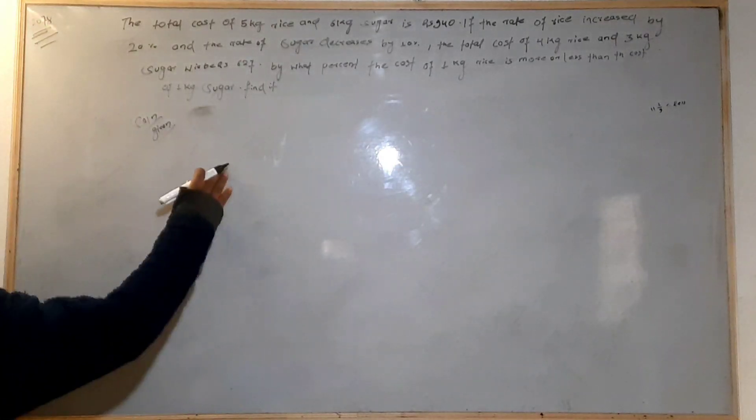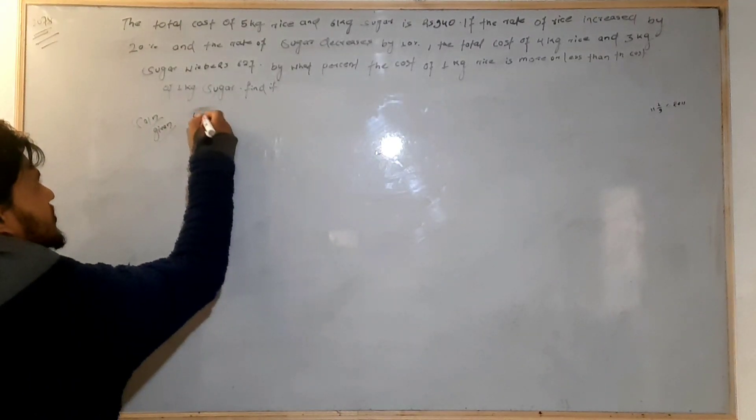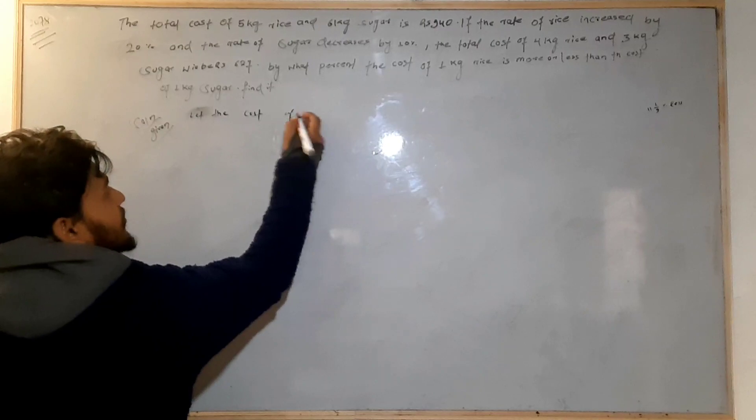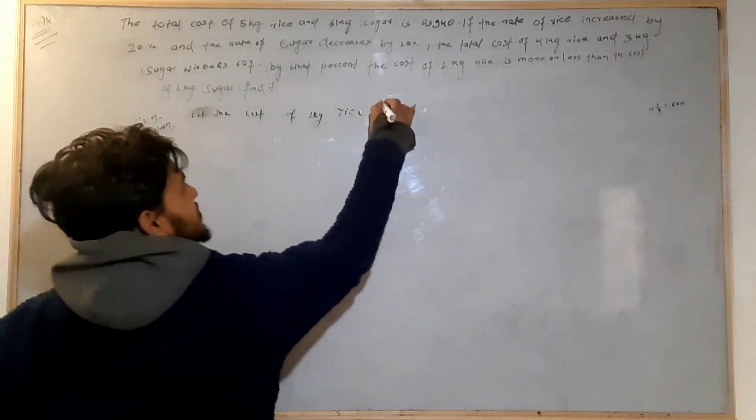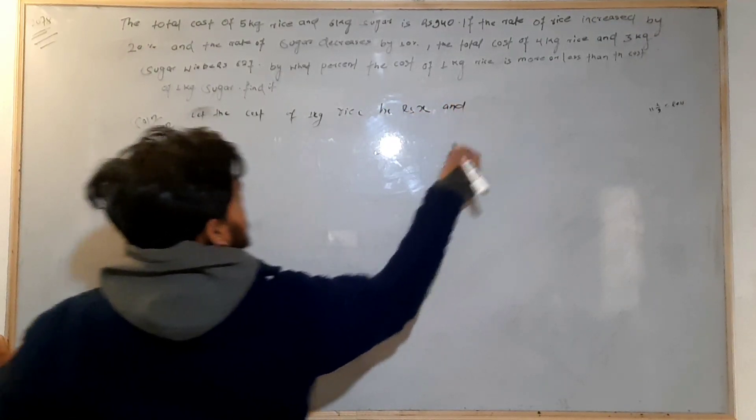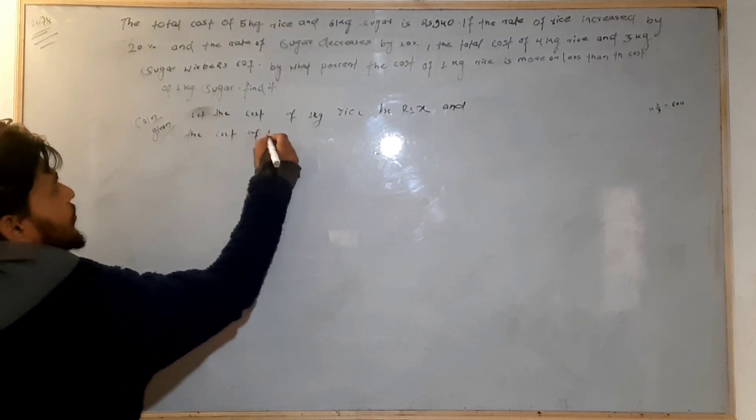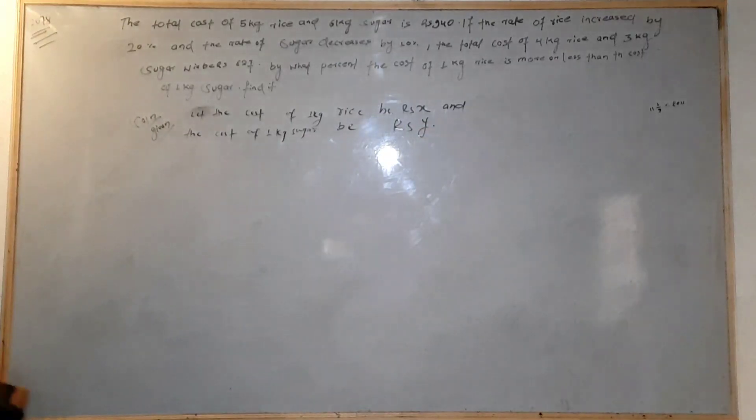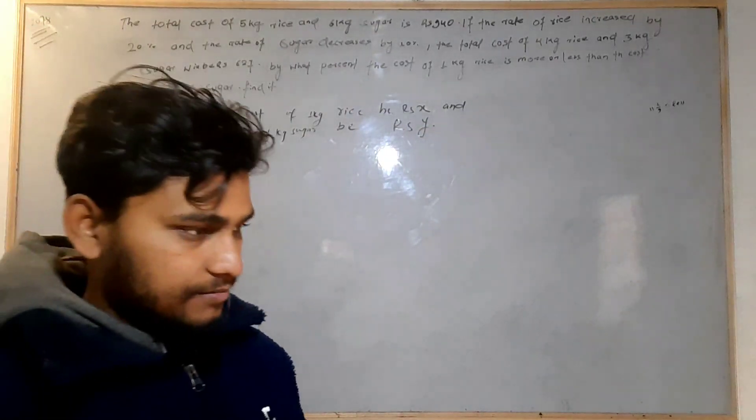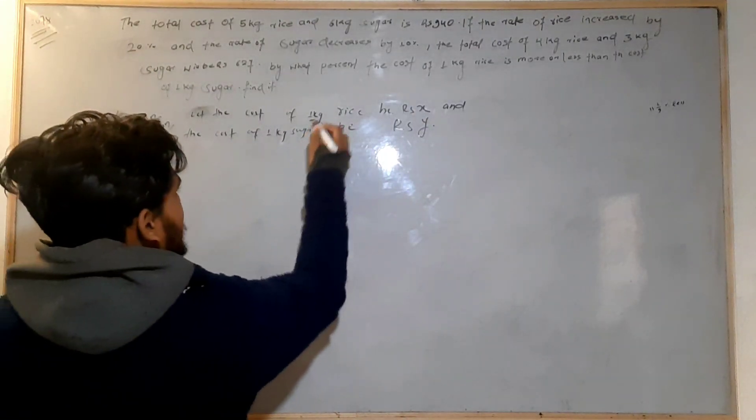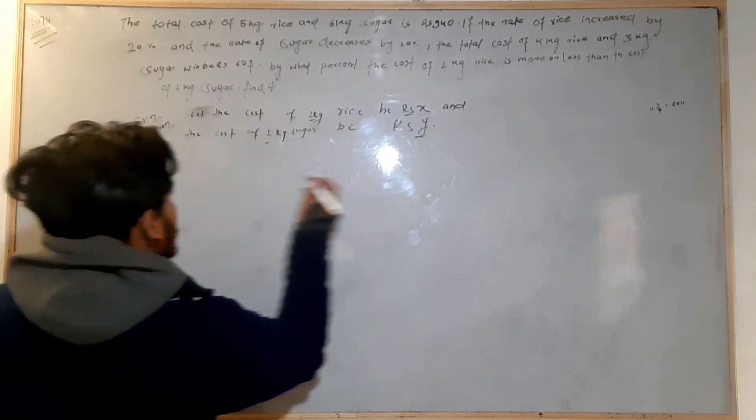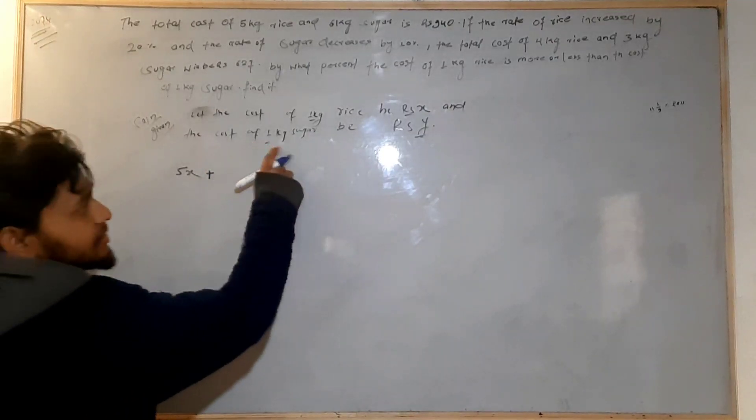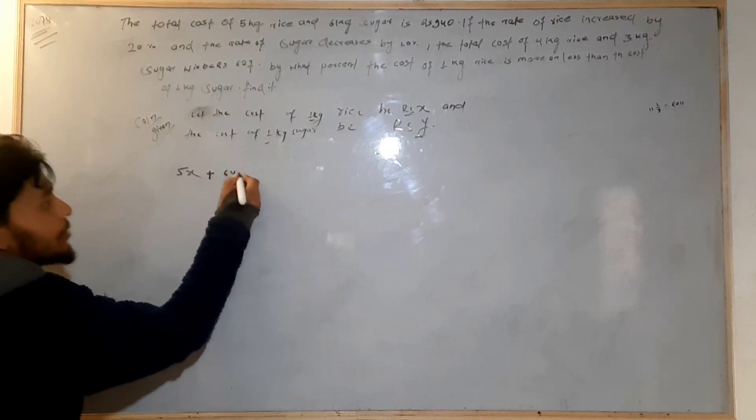Let the cost of 1 kg rice be x and the cost of 1 kg sugar be y. So 1 kg rice is x, 5 kg rice is 5x. Plus 1 kg sugar is y, 6 kg sugar is 6y. How much will it be?